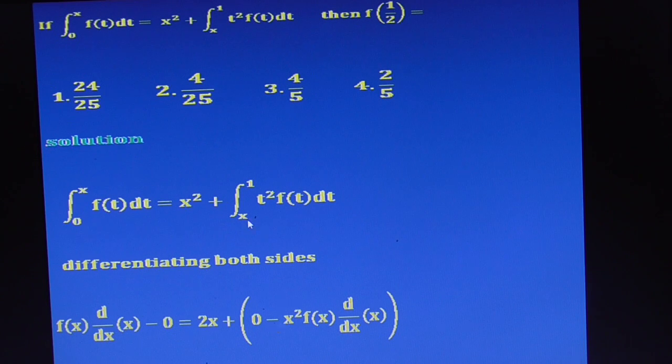The next one, minus, in place of t substitute x here, we get x squared f(x) times d/dx of x. So d/dx of x is 1. In the LHS, we get f(x) only. This is 2x minus x squared f(x). That is your next step.